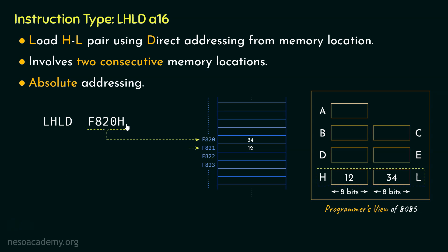Notice that in the 8085 microprocessor there is no instruction type like LBCD or LDED. This is because the HL register pair is the most important register pair, and it can be addressed in different ways — for instance, using the alphabet M we can also refer to the HL register pair's content.